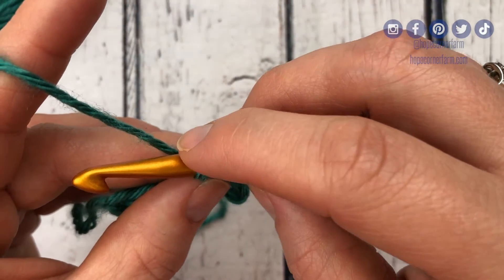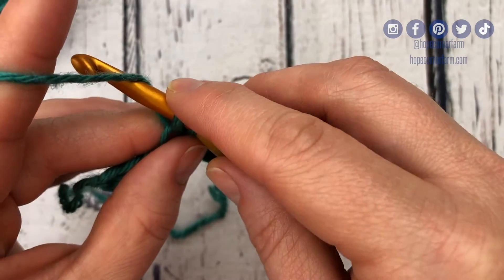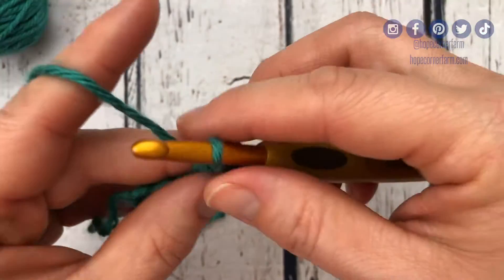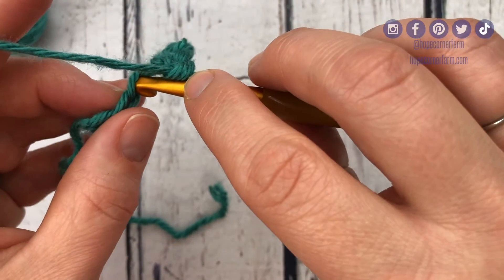So this yarn over again is a back, up, around, grab on, and pull through both of those loops. We'll move on to the next one.